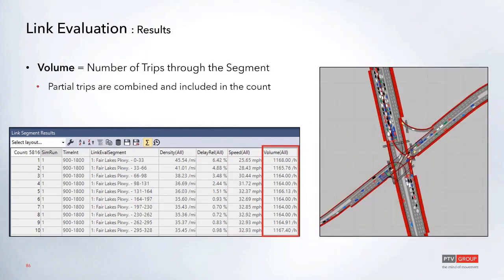Volume is the number of trips that travel through that segment. Partial trips are also included, so if part of a vehicle got on or was leaving the segment, that's included too. This is why you'll sometimes see values like 0.13 or 0.76 show up in the volume — those represent partial trips.